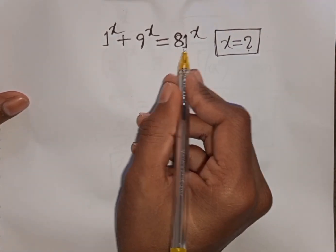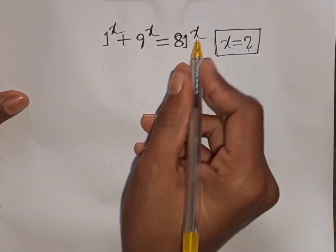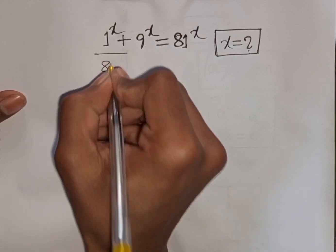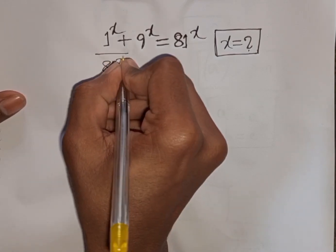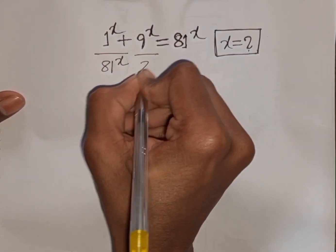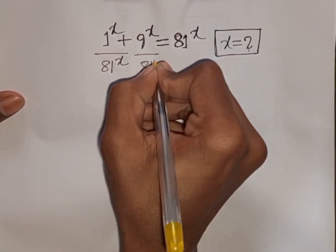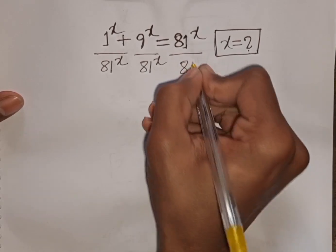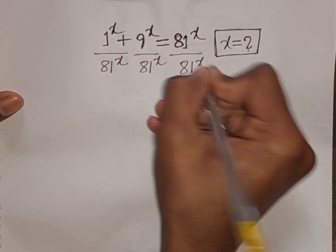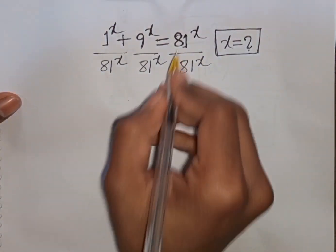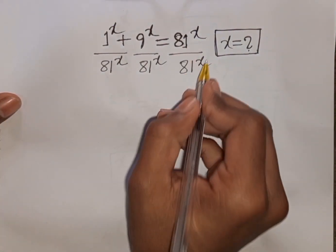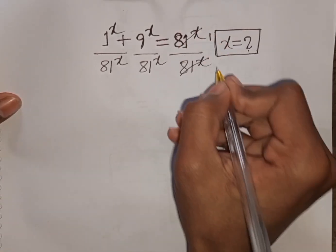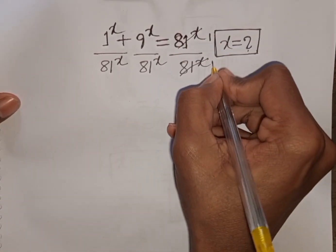First, we divide both sides by 81^x. So divided by 81^x on both sides. Now we see this will be cancelled, leaving 1 here and 1 here.